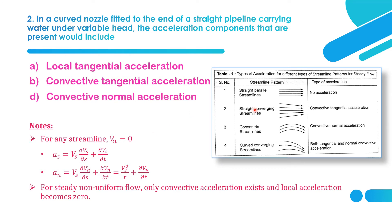This table shows what type of acceleration occurs for different streamline patterns. For straight parallel streamlines, there is no acceleration. For straight converging streamlines, convective tangential acceleration exists because the streamlines meet at a point. For concentric streamlines, convective normal acceleration exists with no tangential acceleration. For curved converging streamlines, both tangential and normal convective acceleration exist.